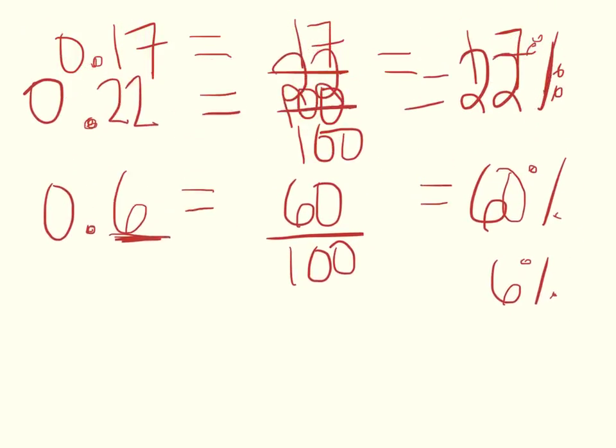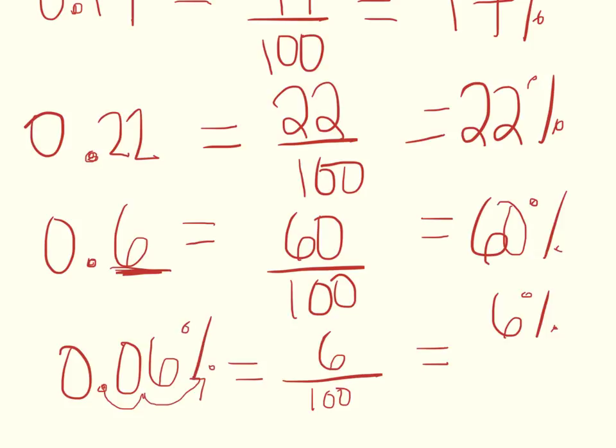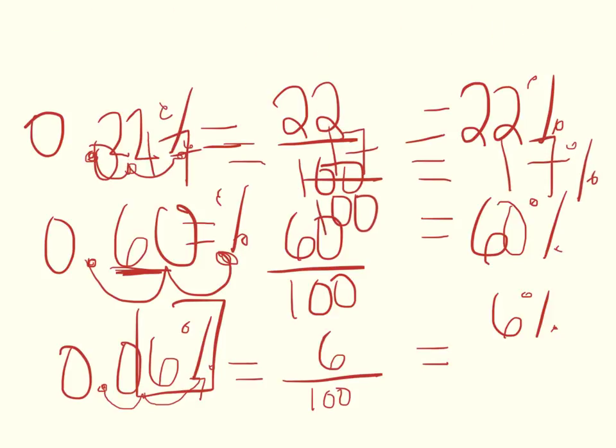Another way you can remember how to convert a decimal into a percent is just shift this decimal two places to the right and then put a percent symbol at the end of it. So this right here is 6%, and this would be 60%. See that? And this would be 22%, and this one up here would be 17 percent.